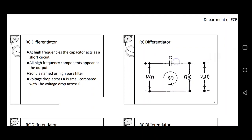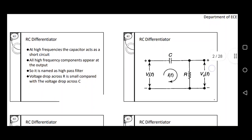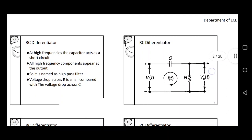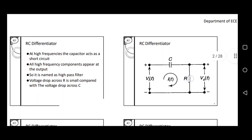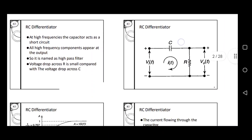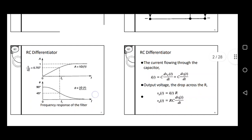At high frequencies, the capacitor acts as a short circuit, so all the high-frequency components appear at the output. This RC Differentiator is also called a high-pass filter. The high-pass filter selects only the high-frequency component. The voltage drop across the resistance is very small compared to the voltage drop across capacitor C. This graph shows the output of the RC Differentiator — the magnitude gain and the phase of the signal.